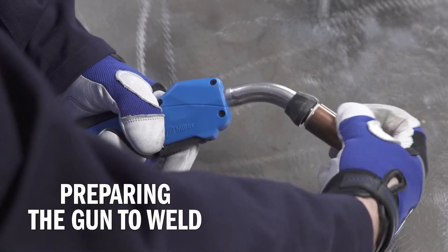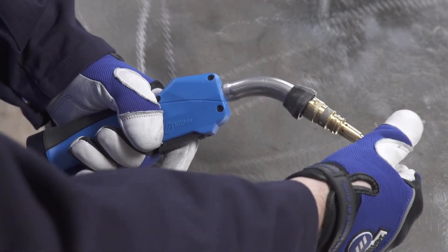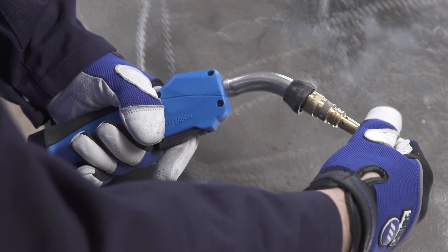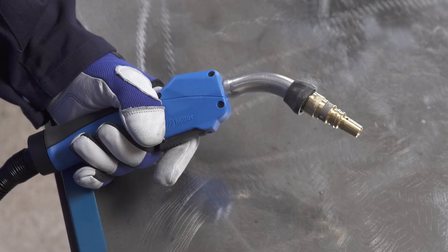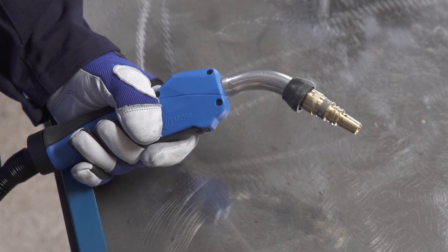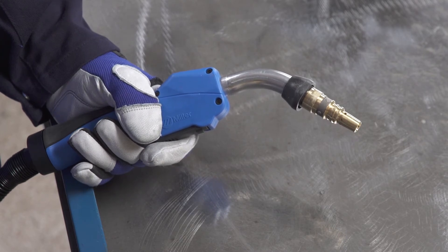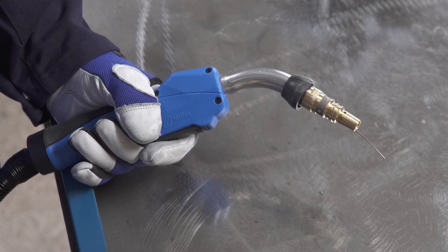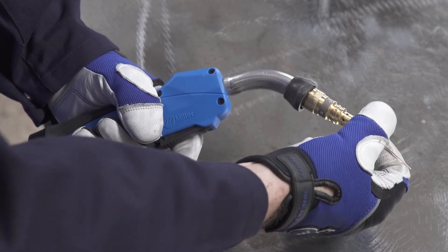Prepare the gun by removing the gun nozzle and contact tip. Then turn the machine on. Now, hold the trigger of your MIG gun and feed out wire until it is visible. Reinstall the contact tip and nozzle.